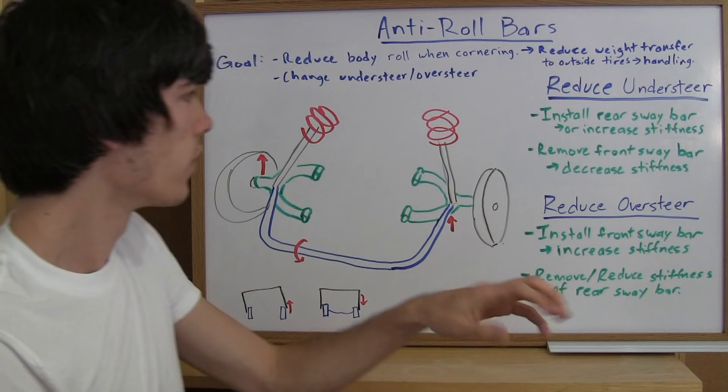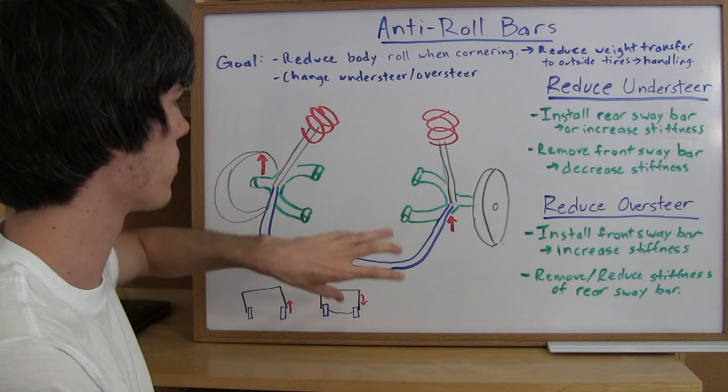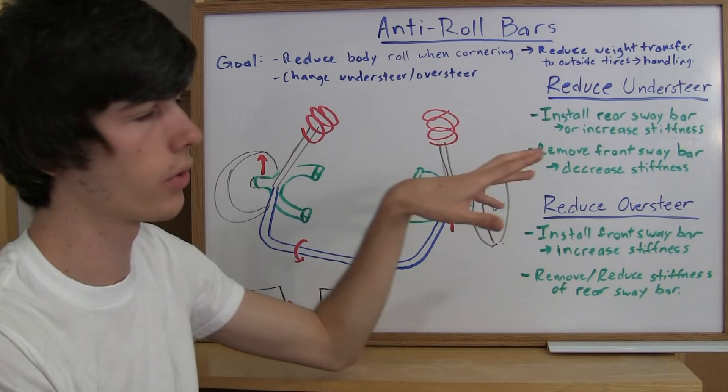So another thing it does is you can change your slip angles by installing these anti-roll bars. And by changing your slip angles, you can reduce your understeer or you can reduce your oversteer.